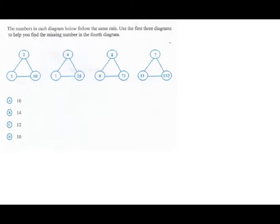The number in each diagram below follow the same rule. Use the first three diagrams to help you find the missing number in the fourth diagram. When answering questions like this we look for the important words and we underline them or circle them. Let us look at rule. A rule here would suggest a pattern, a sequence, so we are going to look for that sequence, that pattern.